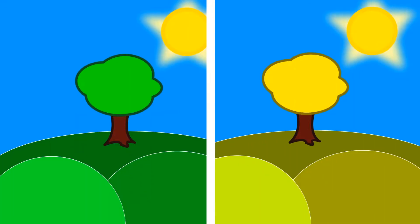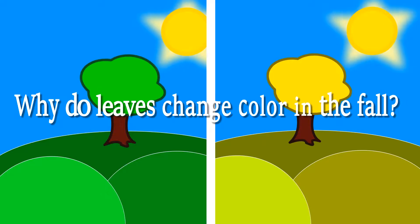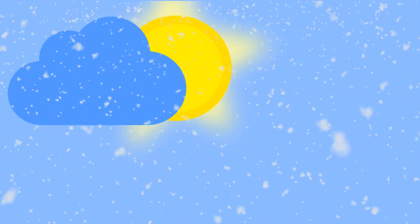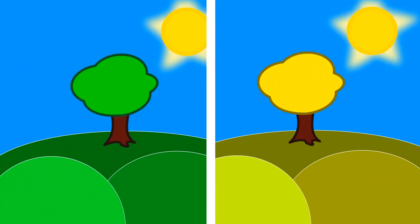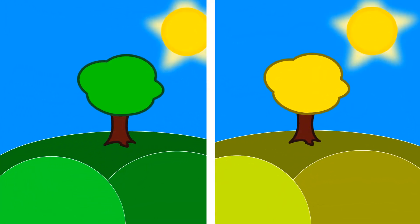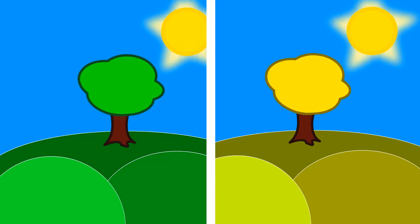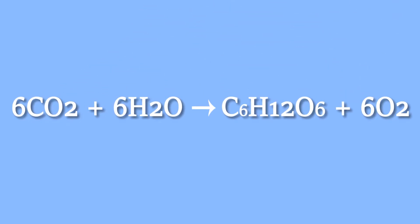Let's get back to our question. Why do leaves change color in the fall? Well, during the fall, when temperatures drop and there is not as much sunlight, plants stop the food-making process. The chlorophyll molecules break down and, voilà, the other pigments can be seen.